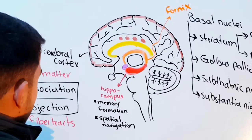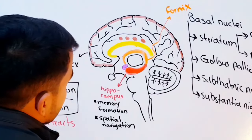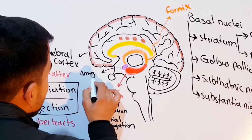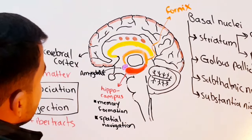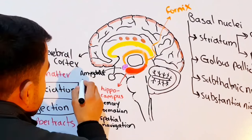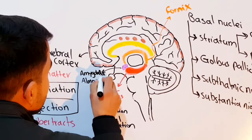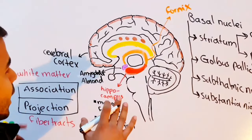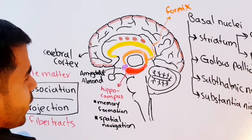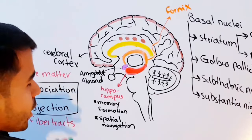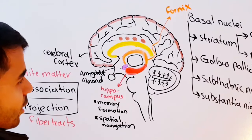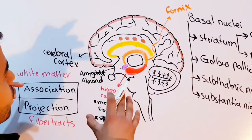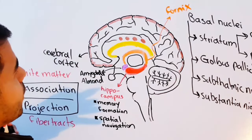We also have the amygdala — a word that literally means almond — an almond-like structure here. The amygdala is very important and is involved in emotions, particularly fear and aggression. So that was all about the structures of the cerebral hemisphere and the cerebrum.